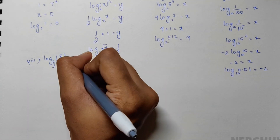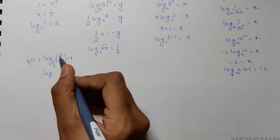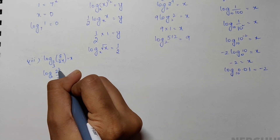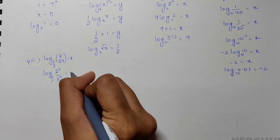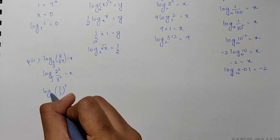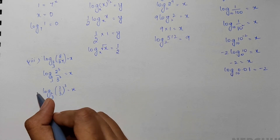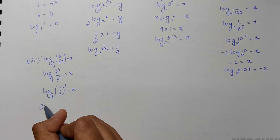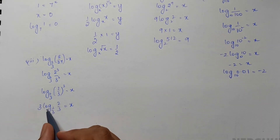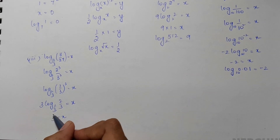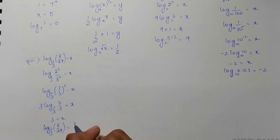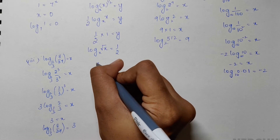For the eighth problem we have log of 8/27 to base 2/3; let this equal x. Now 8 can be written as 2 cubed and 27 as 3 cubed, so we have log of 2 cubed by 3 cubed to base 2/3. This simplifies to log of (2/3) to the power 3 to base 2/3, which equals x. Bringing the power to the front: 3 times log of 2/3 to base 2/3 equals x, and since log of any number to its own base is 1, x equals 3. Therefore log of 8/27 to base 2/3 equals 3.